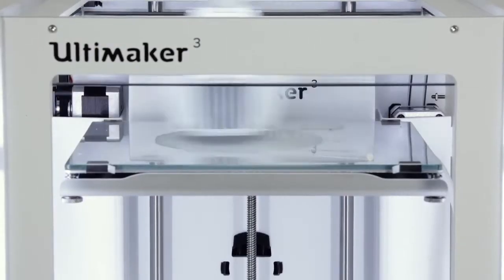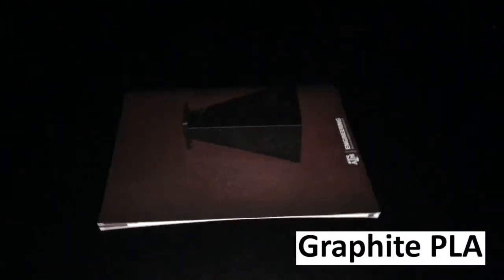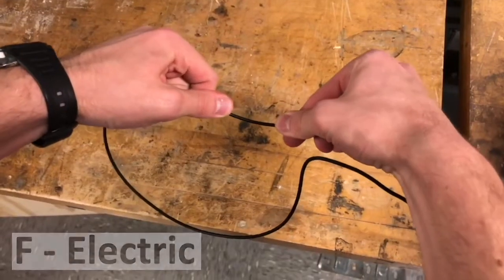The graphite PLA took approximately five hours to print, and unfortunately, the F-Electric filament was too brittle and kept fracturing before entering the printer.